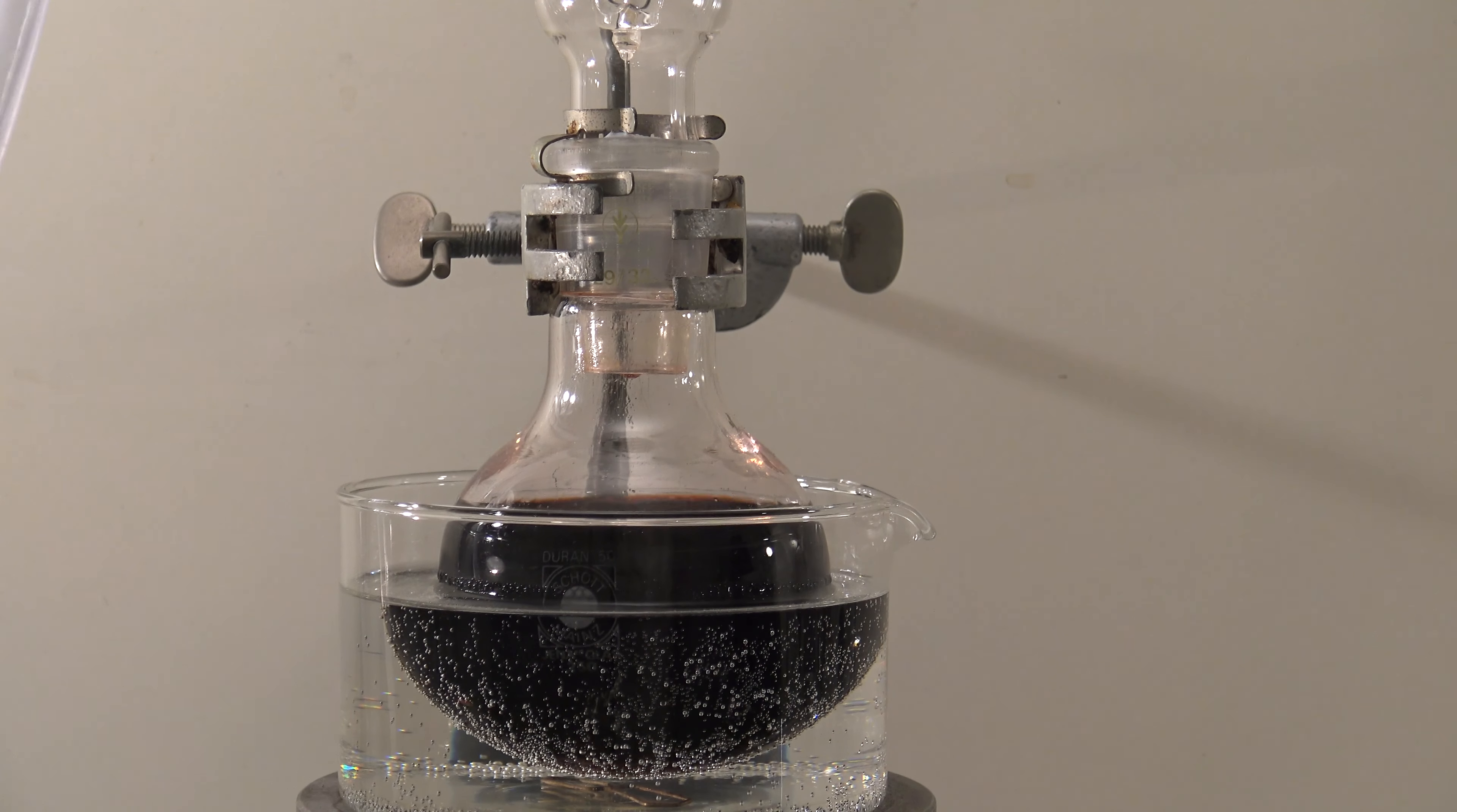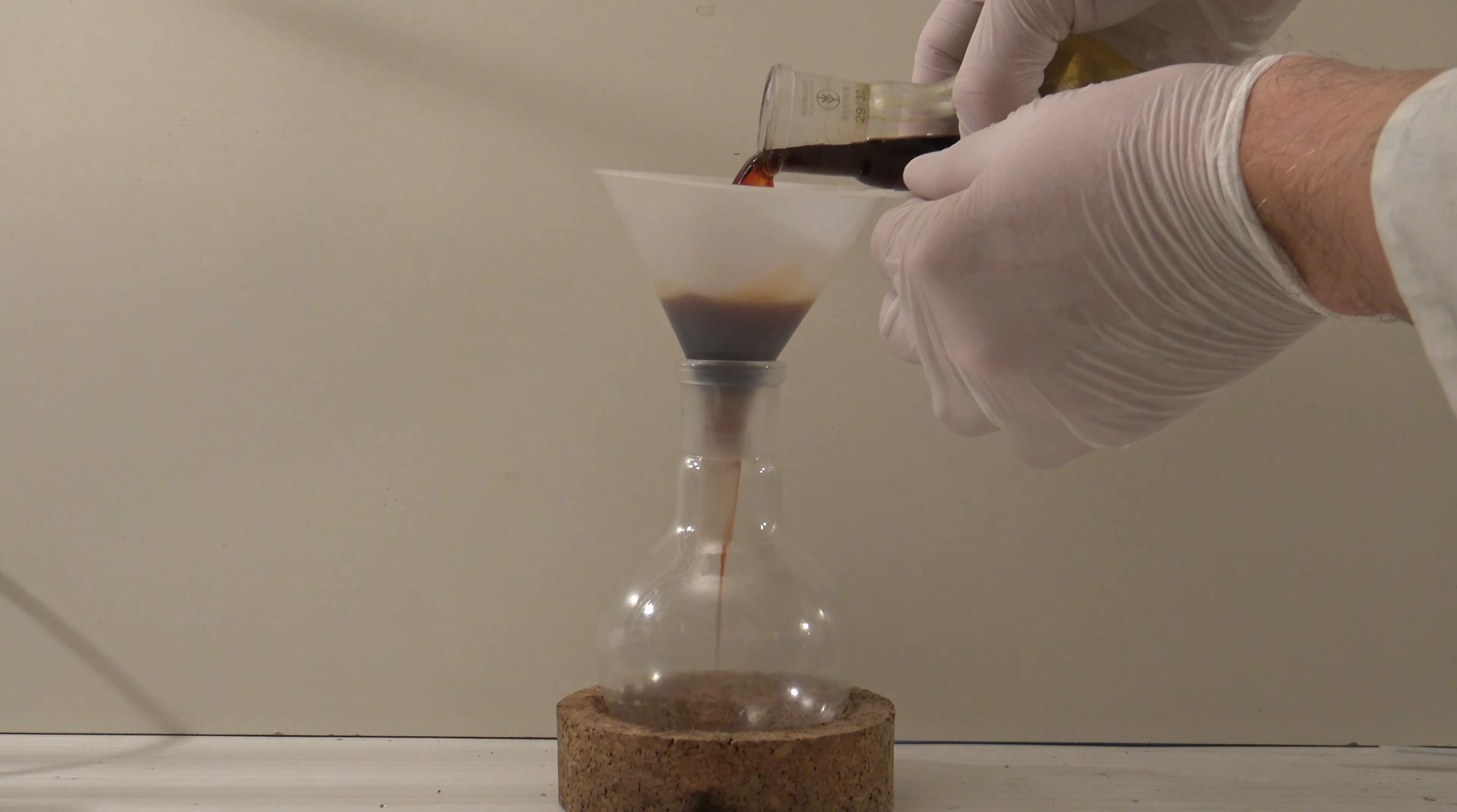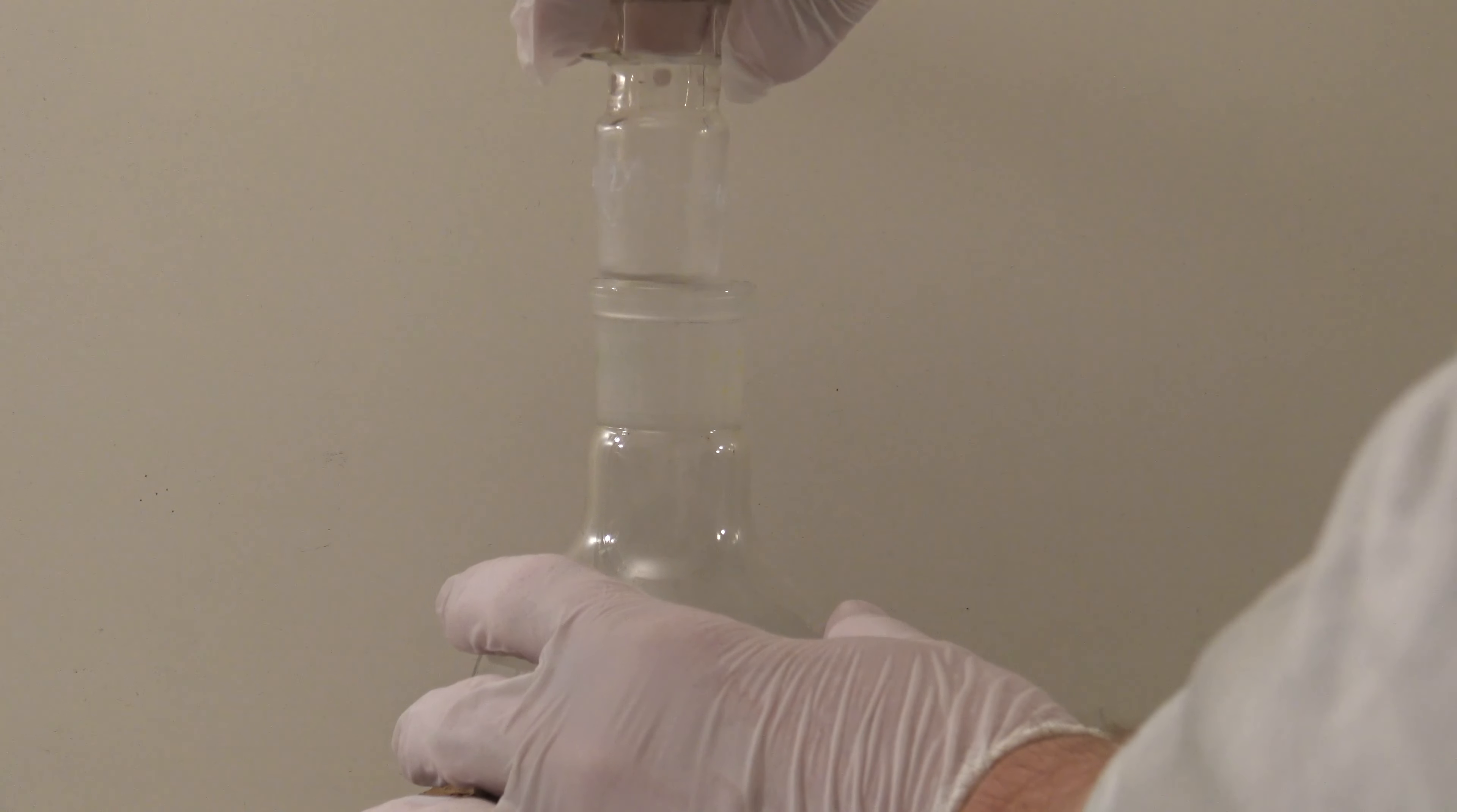But the color of the dichloromethane stayed the same, which was an indicator for the presence of iodine. After 1.5 hours the heating was stopped. A funnel was plugged with cotton wool and the hot solution was added to the funnel. This prevents the crystallization of the product before the residual tin was removed. The solution was left overnight.